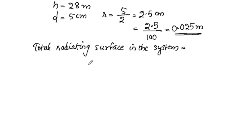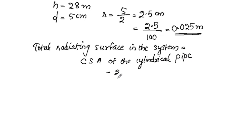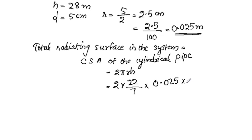The total radiating surface is the CSA of the cylindrical pipe, which is 2πRH. This equals 2 into 22 by 7 into R, where R equals 0.025 meters and H equals 28. 7 into 28 equals 4. So 2 into 22 is 44, and 44 into 4 gives 25 into 4, which is 100.